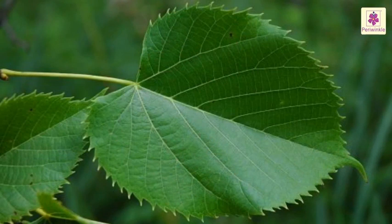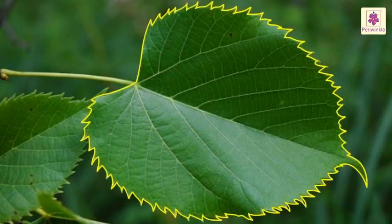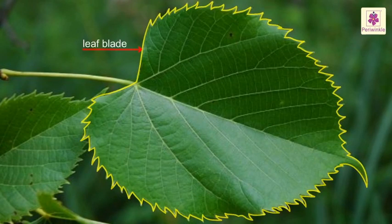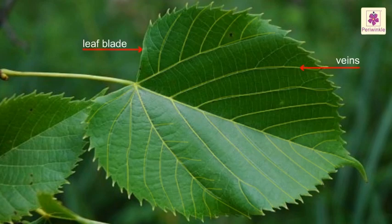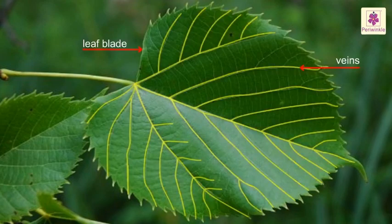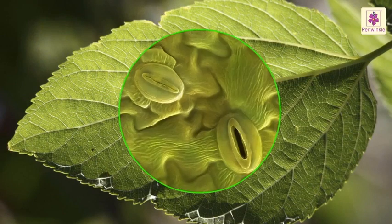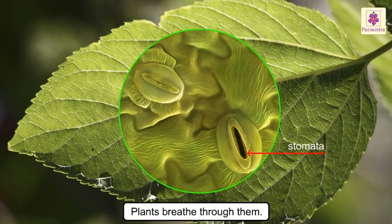Now look at a leaf carefully. The flat surface of the leaf is called the leaf blade. The veins carry water, minerals, and prepared food to and from the leaves. On the lower side of the leaf blade there are many tiny holes called stomata. Plants breathe through them.